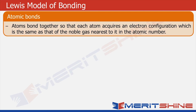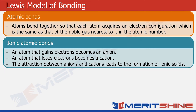Now how about nitrogen? Nitrogen has five electrons and the noble gas nearest to it is neon, which has eight electrons in its outermost shell. So nitrogen will have a tendency to acquire three more electrons. An atom that gains electrons becomes an anion, that is the negatively charged ion.